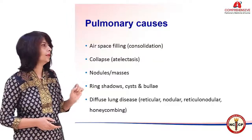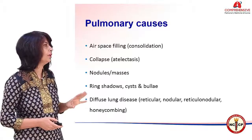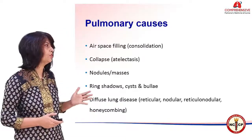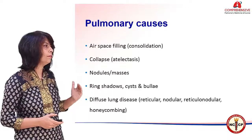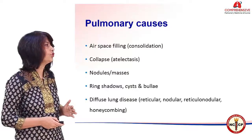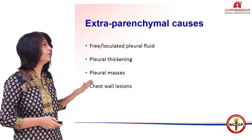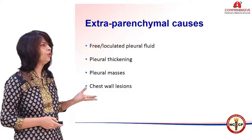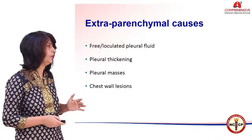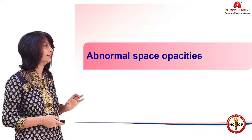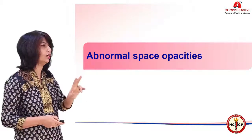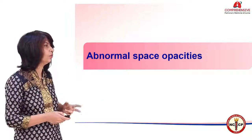When you see a pulmonary opacity, you will label it as a consolidation, airspace opacity, collapse, nodule, mass, cyst, or use diffuse lung disease terms. Similarly, extra-parenchymal lesions — pleural as well as chest wall pathologies — simulate pulmonary pathologies. We have already dealt with the localization part; now we are discussing the use of words. The combination of correct word, correct location, and clinical context will yield a diagnosis.